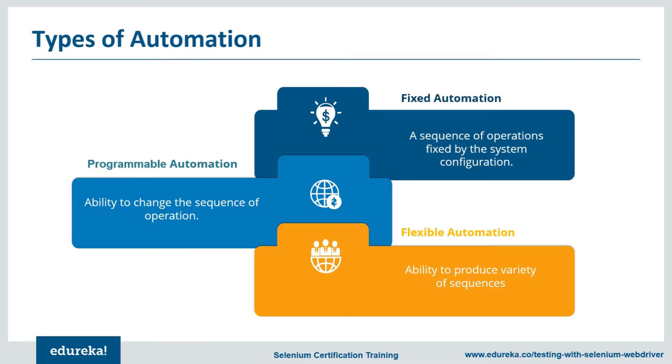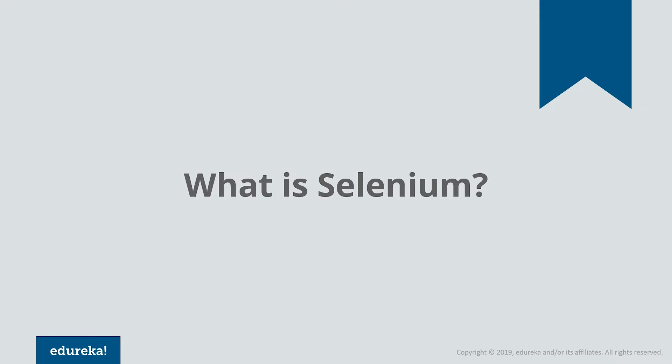Now let me introduce you to the automation testing suite Selenium and talk about its importance. Any software or application being developed needs to be thoroughly tested to ensure the system does not break down. Testing refers to the process of evaluating functionality to make sure the system works fine and helps in detecting errors. Automation testing is more preferred over manual testing because it reduces errors that occur during simulation of the process.